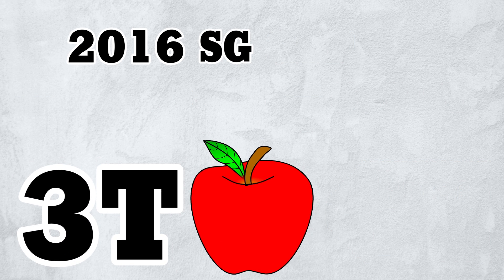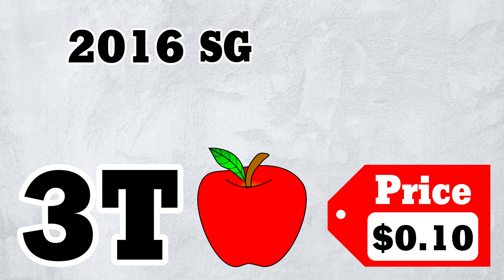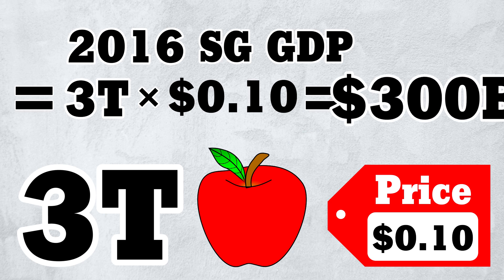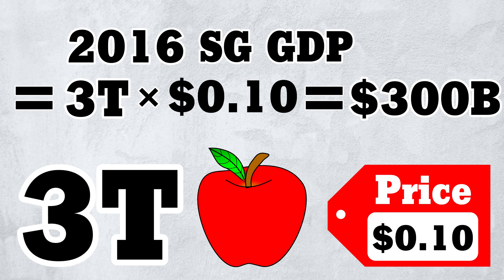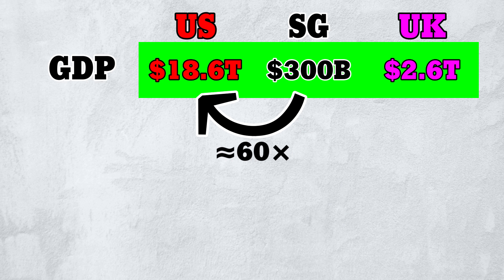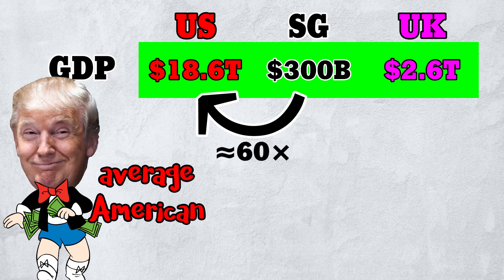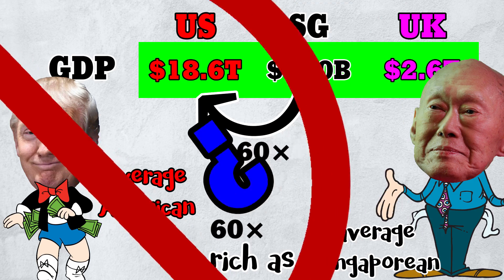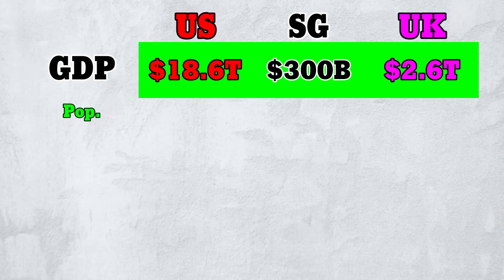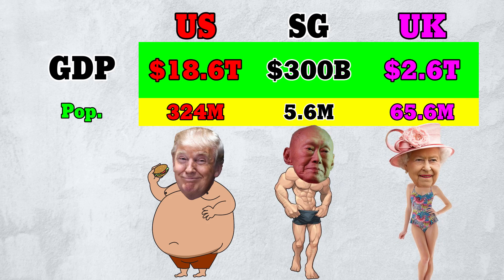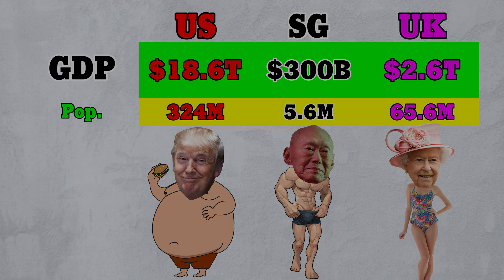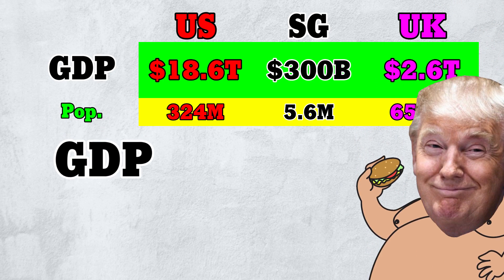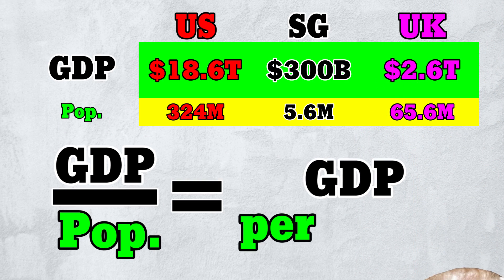Singapore produced 3 trillion apples and each sold for 10 cents. So 2016 Singapore GDP was 3 trillion times 10 cents, or $300 billion. Now, US GDP is about 60 times Singapore's — but that doesn't mean the average American is 60 times as rich as the average Singaporean. US GDP is much larger because its population is much larger. For a better comparison of economic well-being, we must adjust for population, which brings us to Step 2: take GDP and divide by population to get GDP per capita.